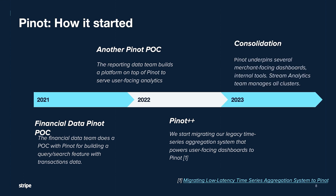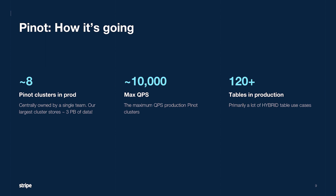So where are we today? My team owns and manages all of the Pinot clusters that sprung up from different parts of the company, so that we can provide a unified user experience to the entirety of Stripe. We manage about eight Pinot clusters in production today. Our largest one has about three petabytes of data. We do 10,000 max QPS and run about 120-plus tables in production.